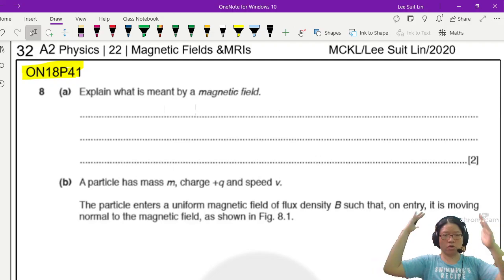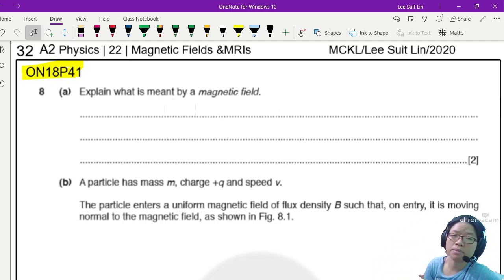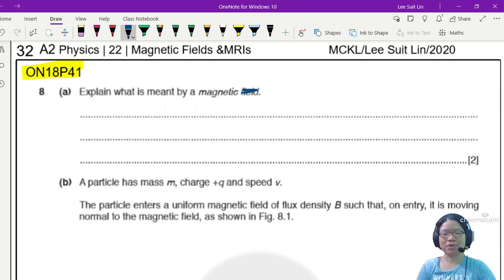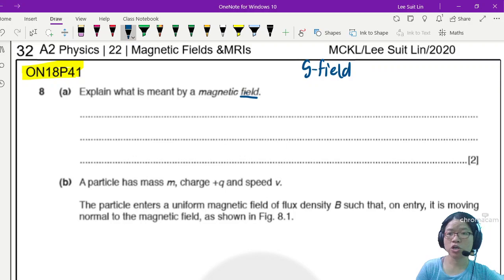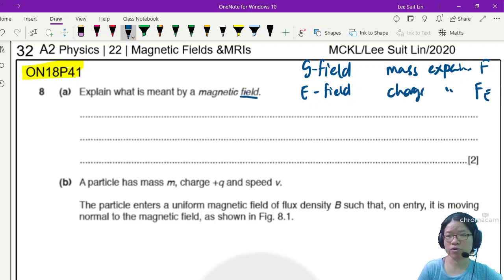Welcome to another video on magnetic fields. In this question, we are still talking about magnetic forces on a moving charge. But first, let us explain or define what is meant by the term magnetic field. So whenever you see the word field, it's always a region of space where objects with certain properties will experience a force.